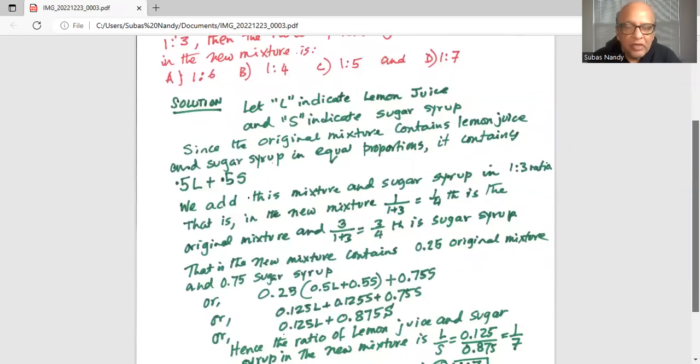So if we distribute or multiply by 0.25 the terms inside the parenthesis, we get 0.25 times 0.5 is 0.125L plus 0.125S plus 0.75S.